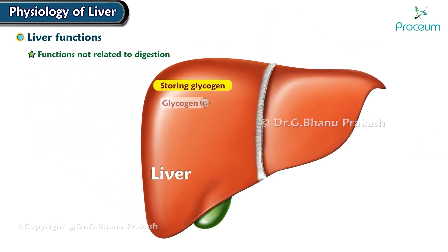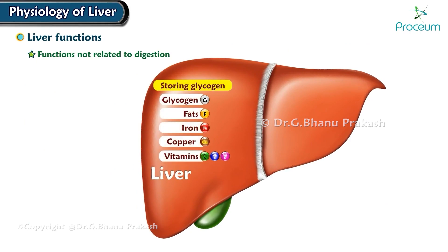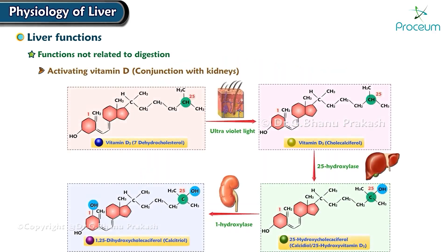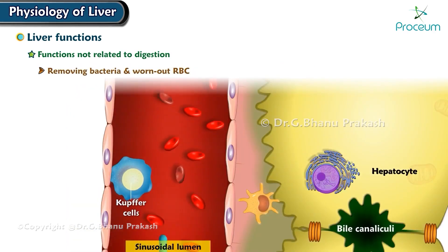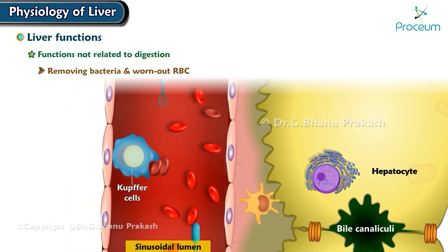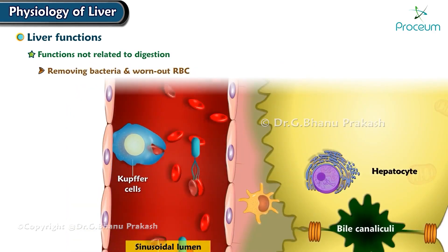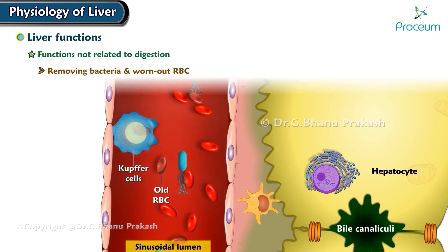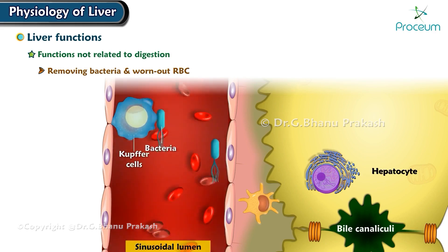Storing glycogen, fats, iron, copper, and many vitamins. Activating vitamin D, which the liver does in conjunction with the kidneys. Removing bacteria and worn-out red blood cells, thanks to its resident macrophages.